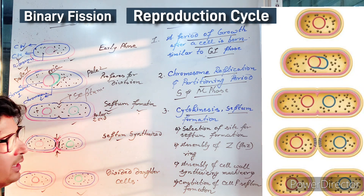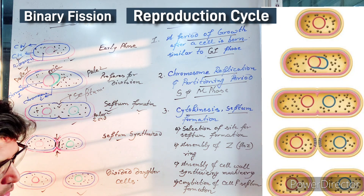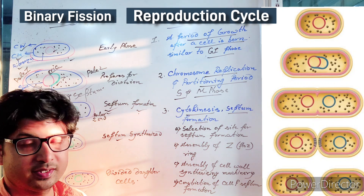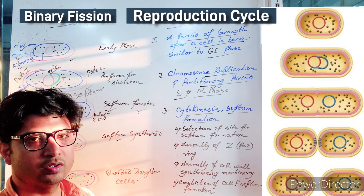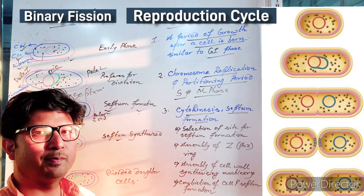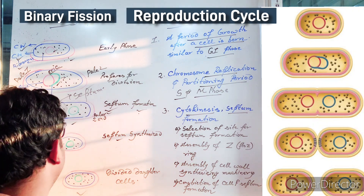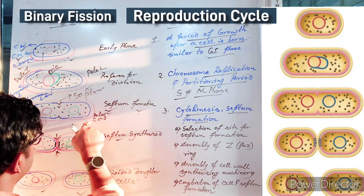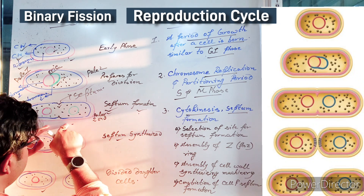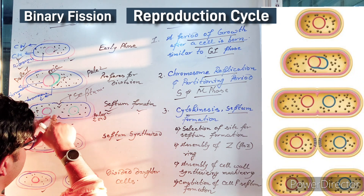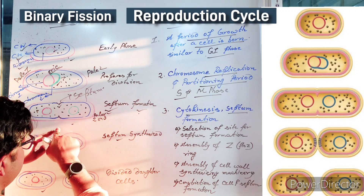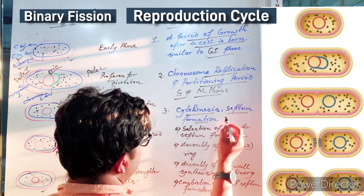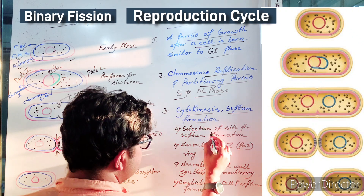After septum formation, cytokinesis takes place — the same procedure as in eukaryotes where two cells are separated from each other. Up to this point the two cells are not yet separated; they are still a large parent cell where everything is divided and duplicated. Now cytokinesis and septum formation will proceed.